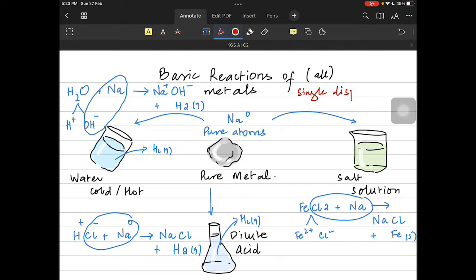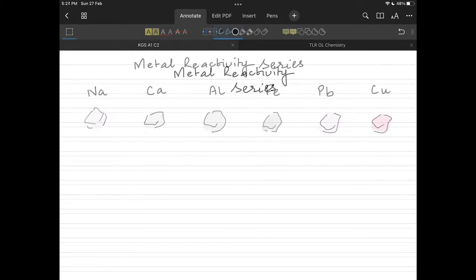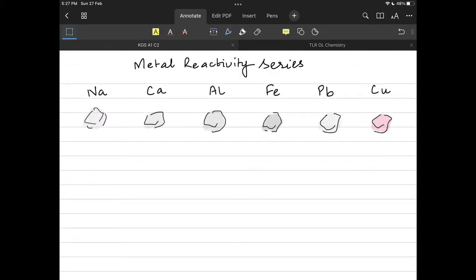These are all examples of single displacement reactions because the metal which had a zero charge in the beginning tries to take the position of other element or other ion. Sodium makes sodium hydroxide, it makes sodium chloride, it makes again sodium chloride and it displaces the other element or ion and that leads us to metal reactivity series.